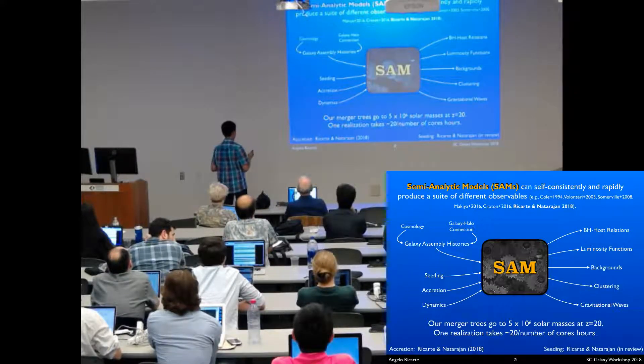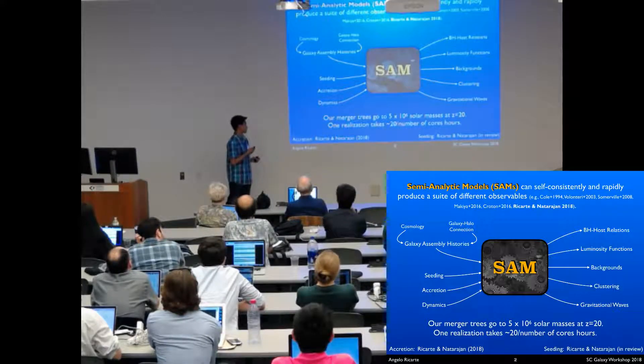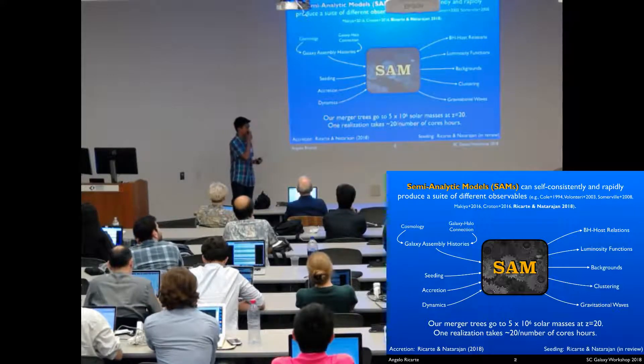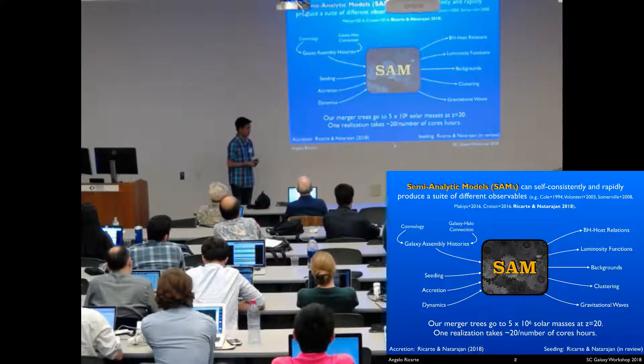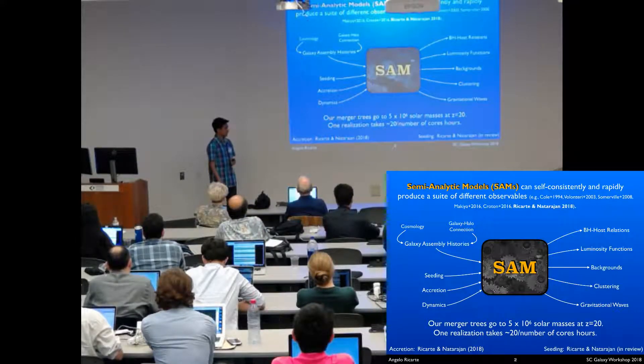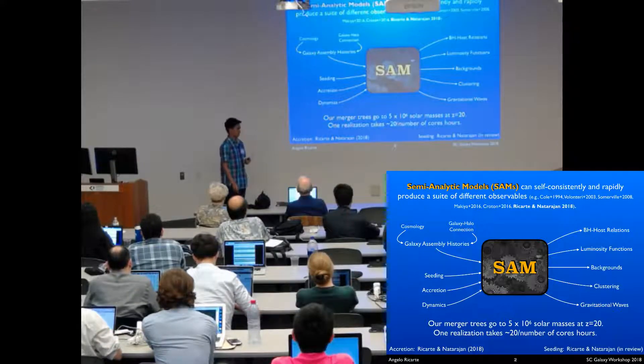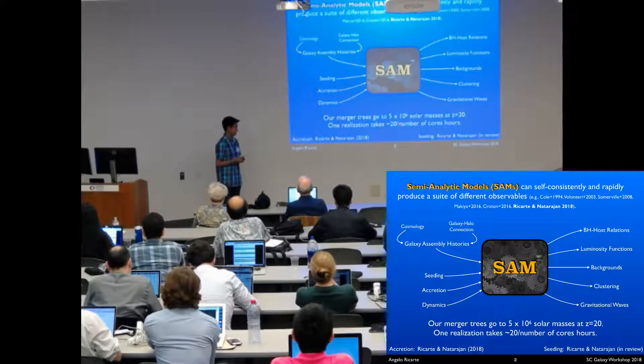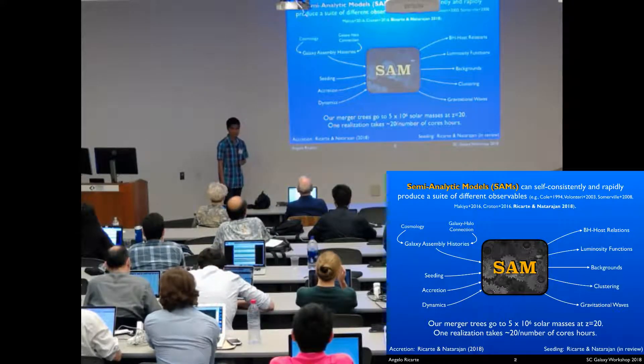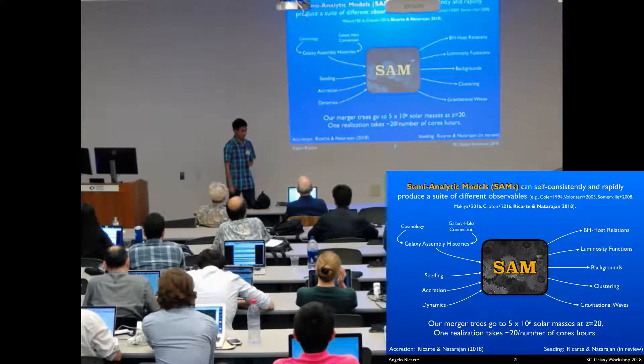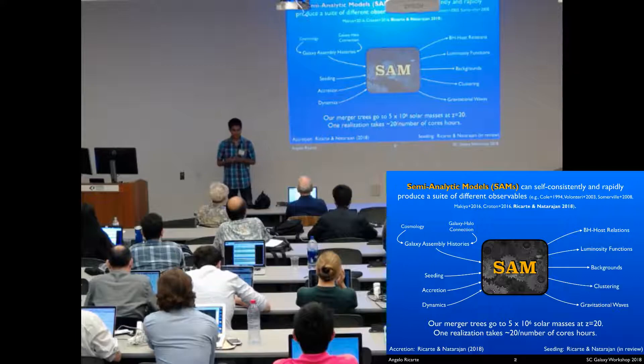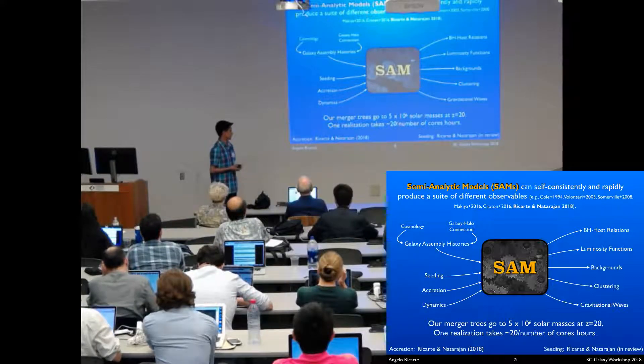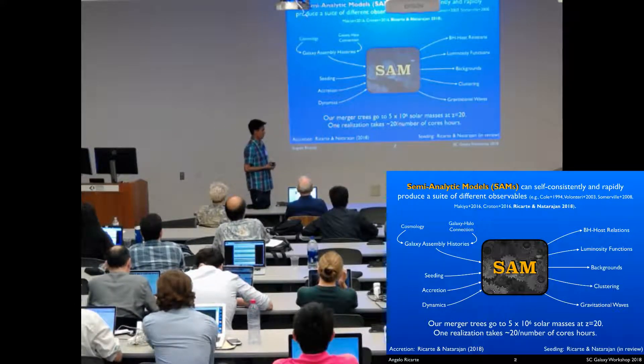We combine that with physical prescriptions about seeding, accretion, and dynamics and put it through the machinery to produce things like black hole host relations and luminosity functions, things we use to calibrate the model, as well as things that are less constrained like gravitational waves that will be produced by LISA. Our merger trees go down to 5 times 10 to the 6 solar masses at redshift 20 using Press-Schechter techniques. One realization of the universe with this model takes a few hours using a few of the department's cores.